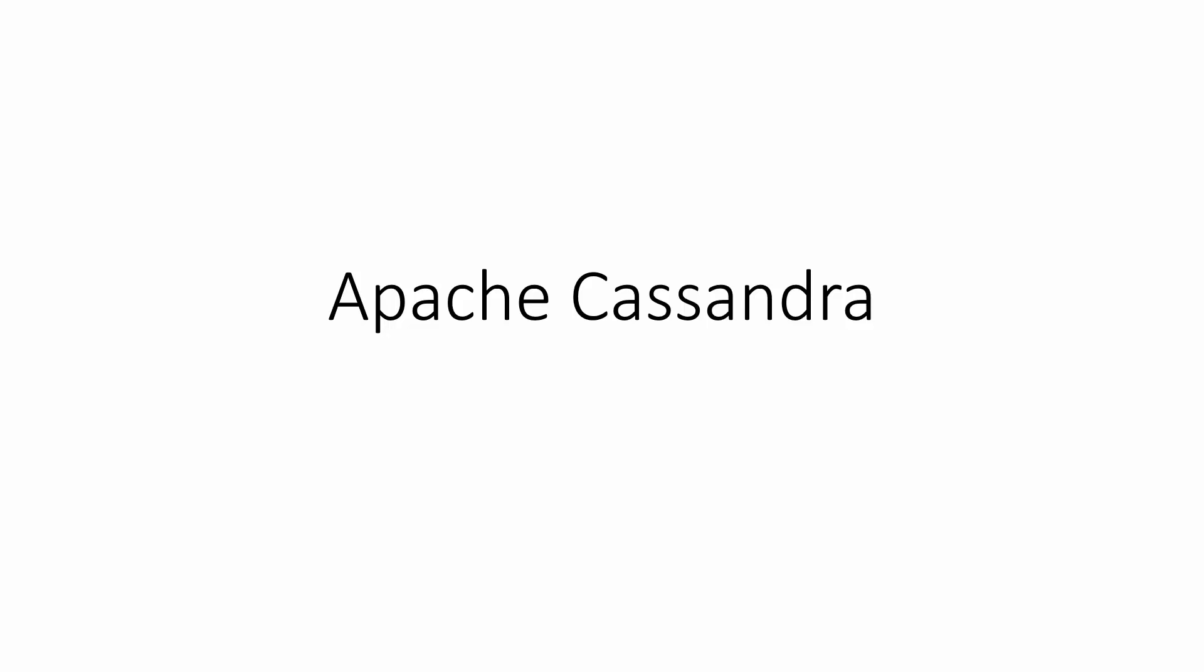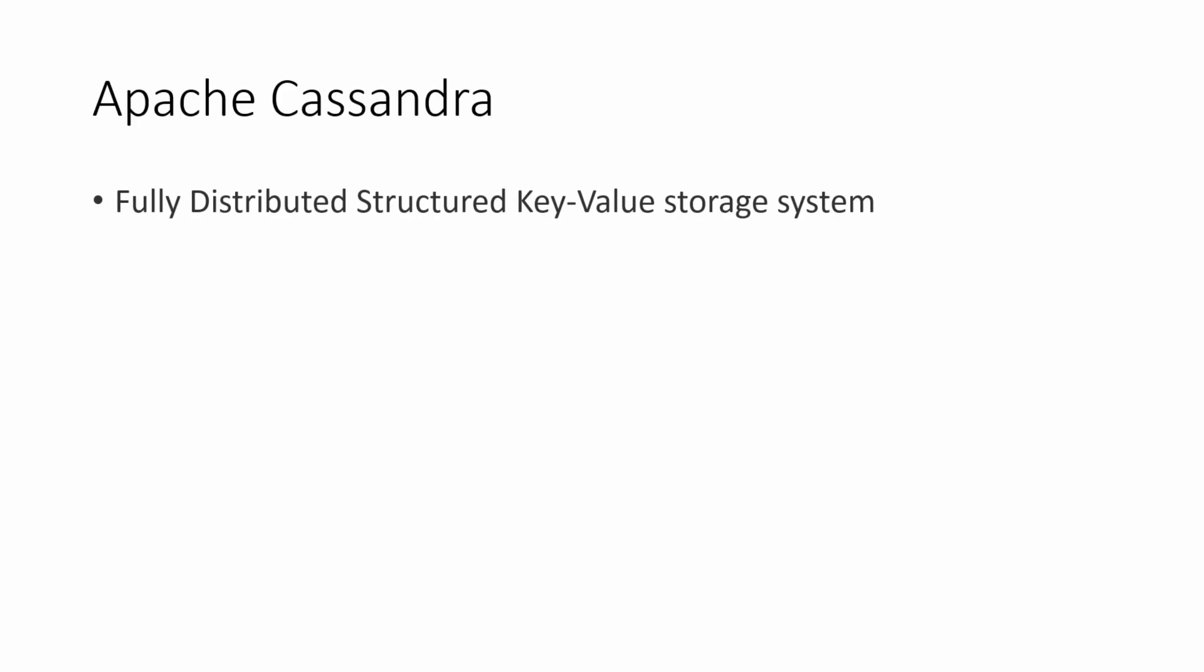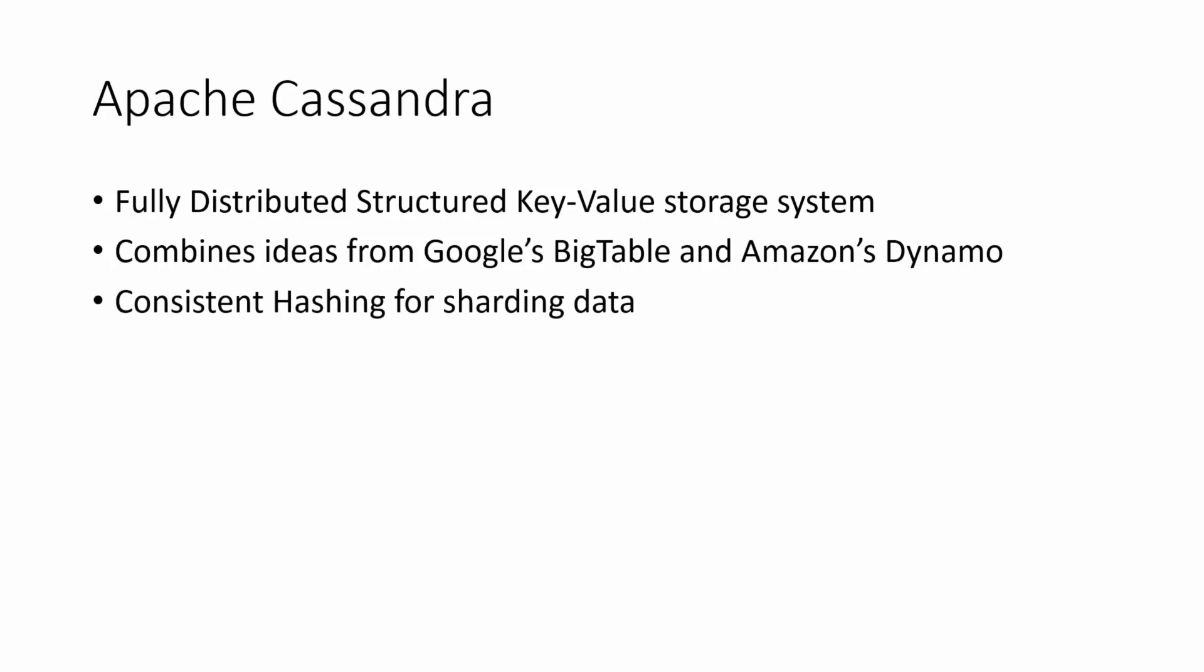In this video we look at Apache Cassandra. Apache Cassandra is a fully distributed structured key-value storage system. It combines ideas from multiple places, most notably Google's BigTable and Amazon's Dynamo. It uses consistent hashing for the sharding of data and has an interesting property of tunable consistency on a per-operation basis, which we will see shortly.